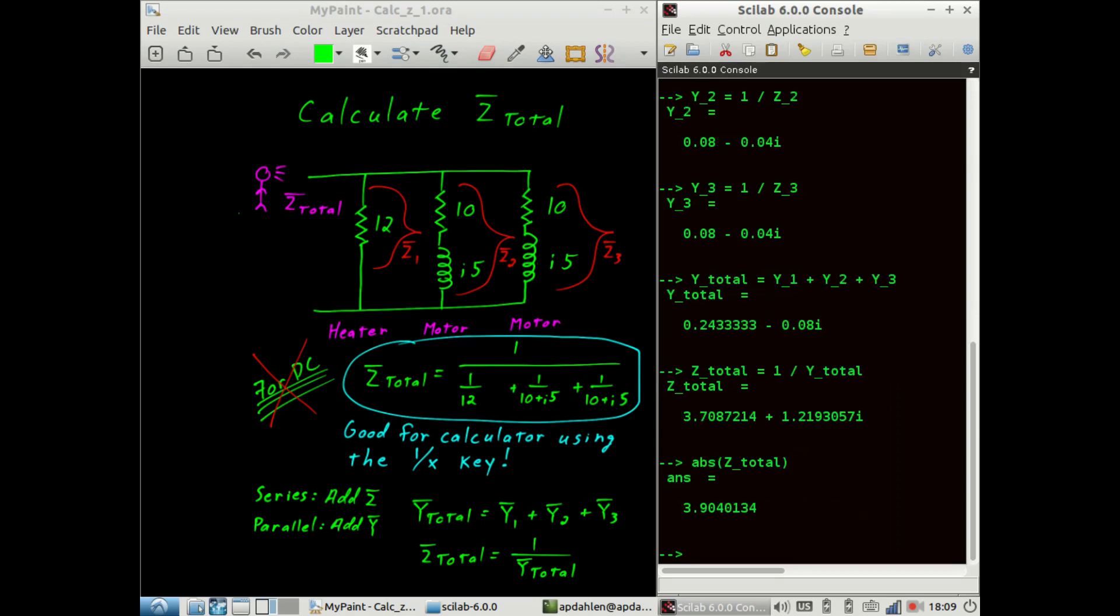And then if we wanted to calculate the angle, we'll have to go through a little bit more work. When you have a complex number, Scilab allows you to pull out the real and imaginary parts. If you use the real function, and then enter Ztotal as a parameter, that will tell you the real component. You can also do that with the imaginary. So IMAG, then the parameter Ztotal tells you the imaginary part. Now we can assign these to some variables.